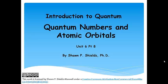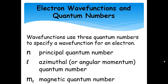Quantum numbers and atomic orbitals. Let's get more in depth about electron wave functions and start including quantum numbers. Wave functions — these electron wave functions that we call orbitals — use three quantum numbers to specify a particular wave function for an electron, or in other words, three quantum numbers to specify a particular orbital.